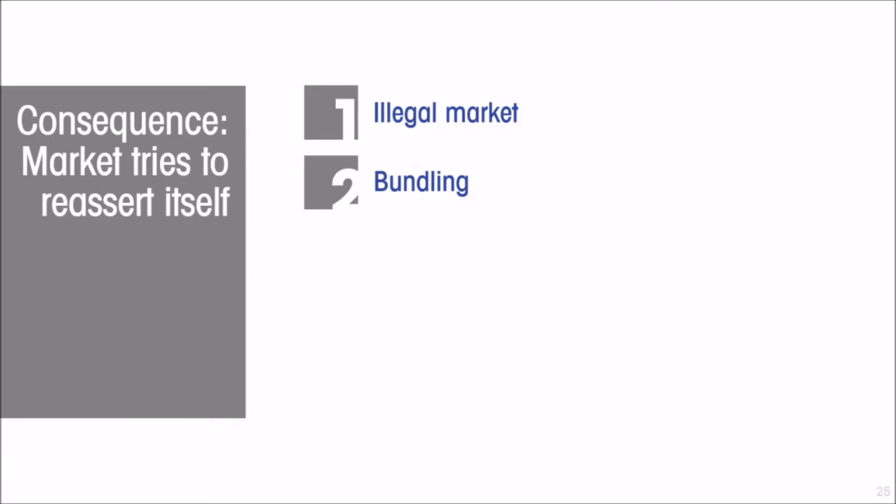One way the market reasserts itself is by bundling. Bundling means that the product on which the price ceiling — the forced low price — applies is bundled with, or married to, a second product which the seller sells above its normal price. For example: you can buy my sanitizer at the low price, but you also have to buy laundry detergent at above the normal price. That way, the bundle ends up being sold for what would have been the market price of the two together.